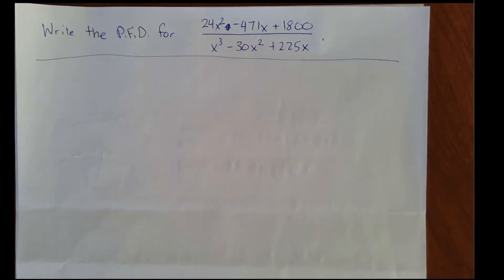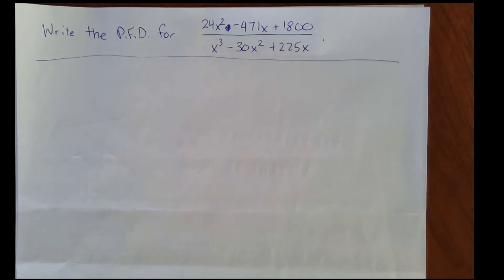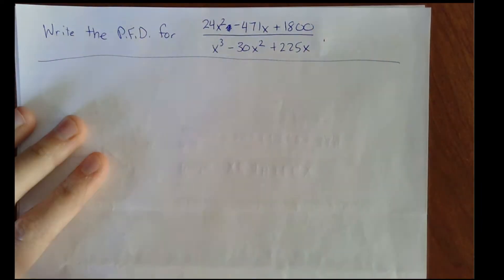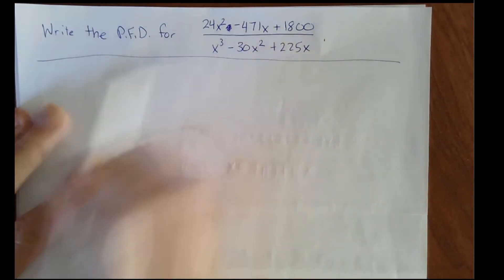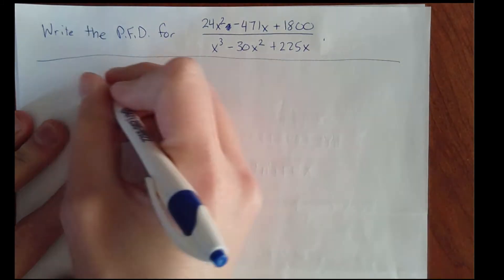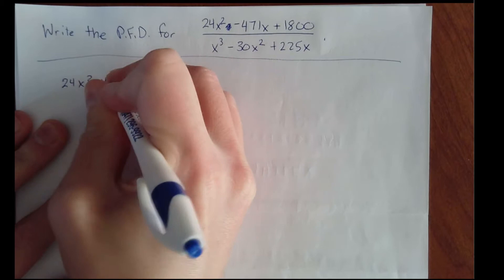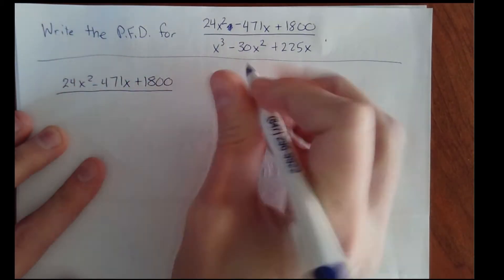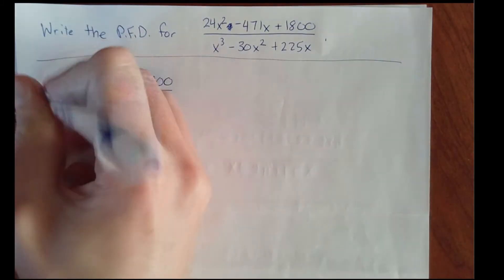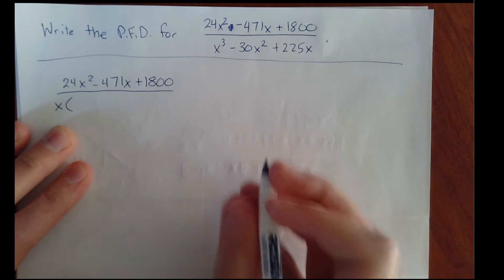We want to write the partial fraction decomposition for this slightly intimidating looking rational function. We have a quadratic numerator and a cubic denominator, so I'm going to start by trying to factor this denominator. The numerator is 24x squared minus 471x plus 1800. First thing I'm going to do is factor out an x — pull out the GCF — and we'd get x squared minus 30x plus 225.